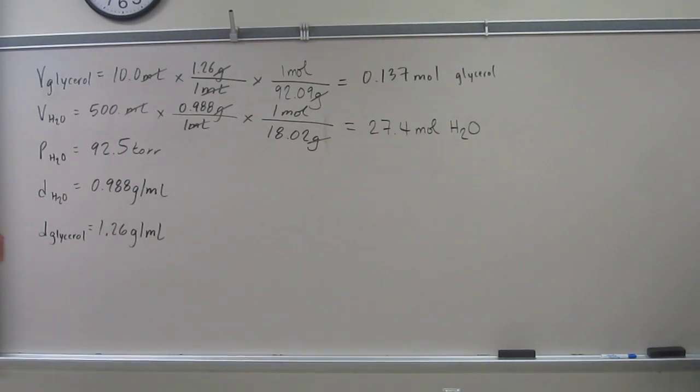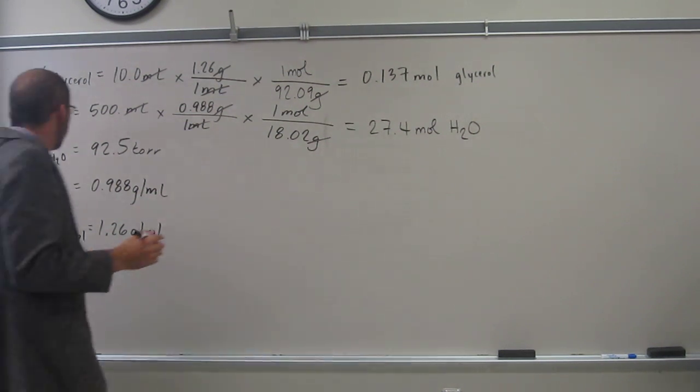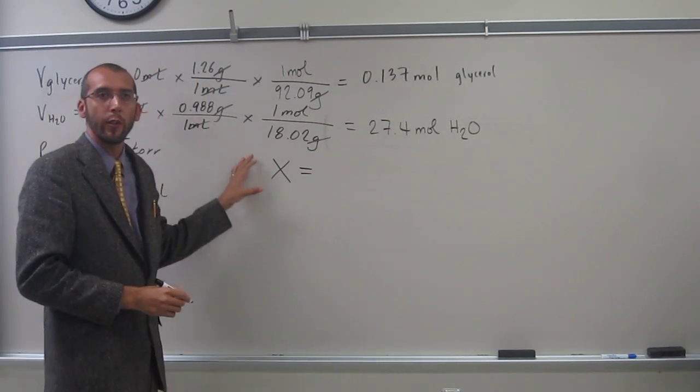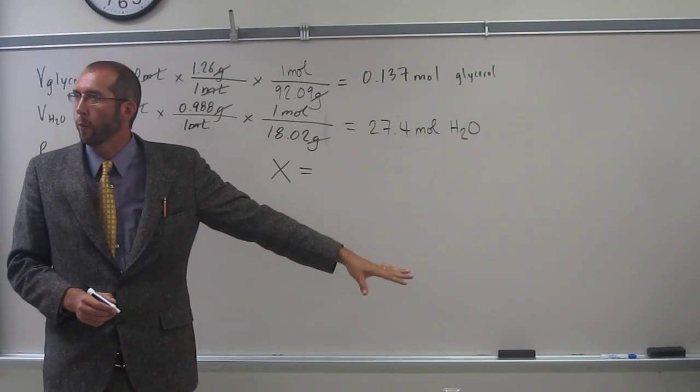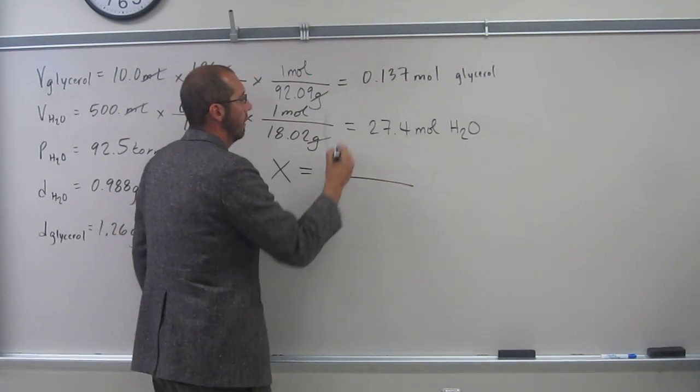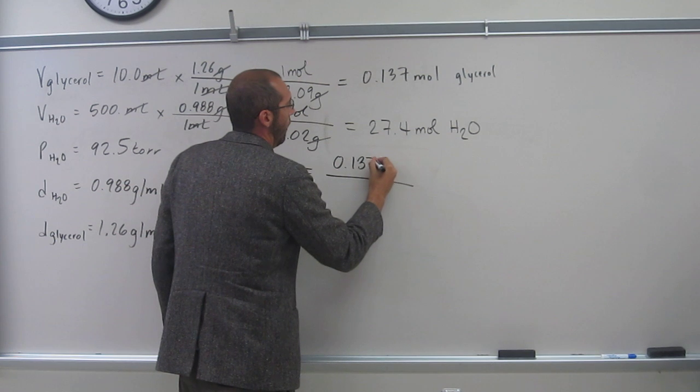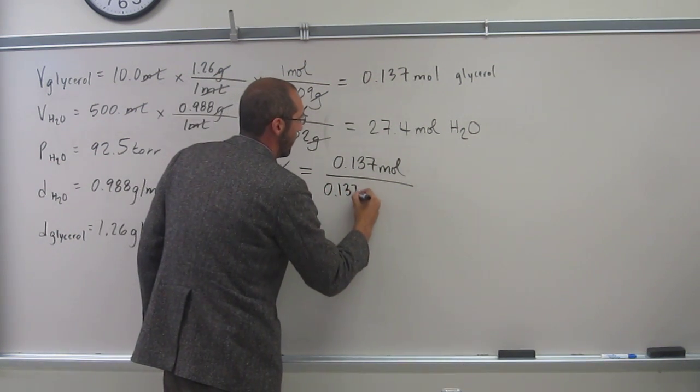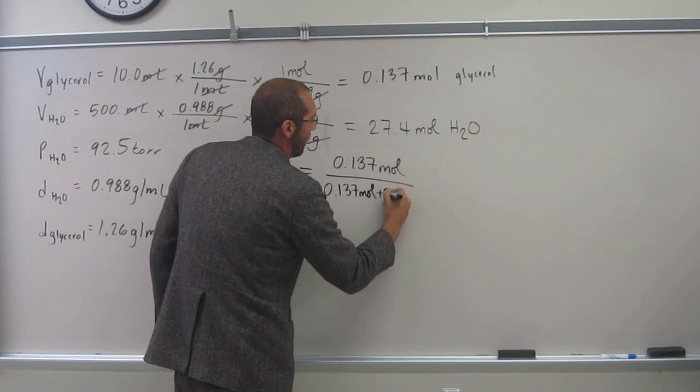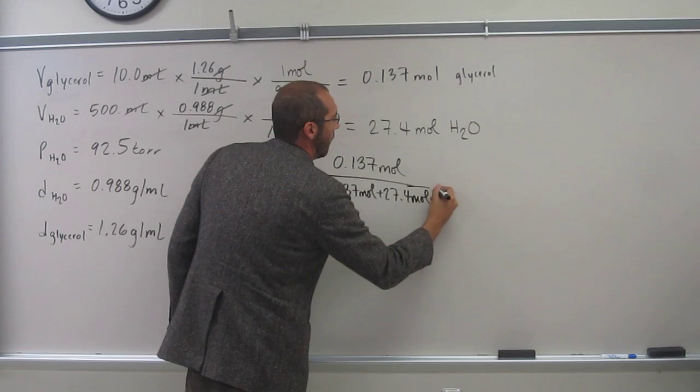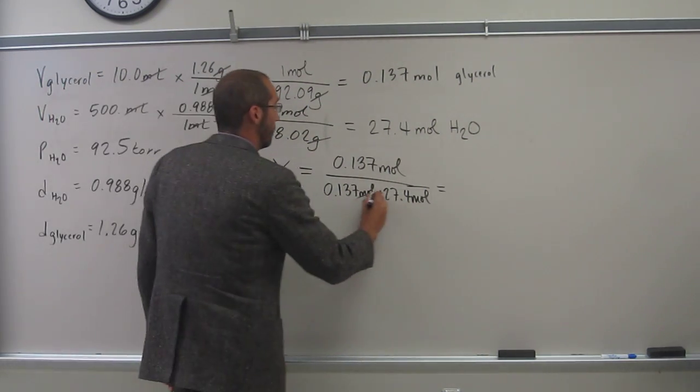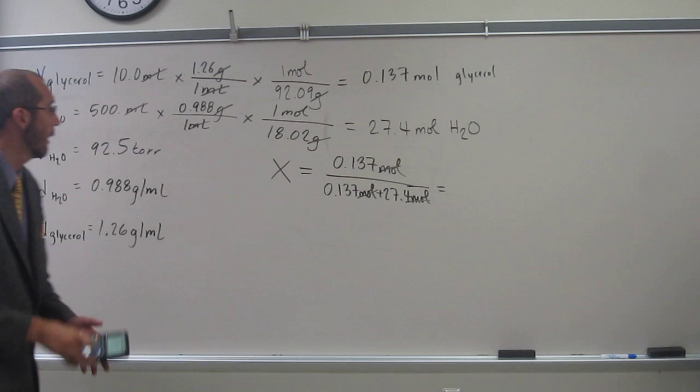So now we want to figure out what's the mole fraction of the solute. The mole fraction is going to be the moles of what you're looking for over the total number of moles. So what's on the top? 0.137 moles. Is everybody okay with that? So this is 0.137 moles plus 27.4 moles. And that's going to give us the mole fraction. What's the units of the mole fraction? No units. Very good.